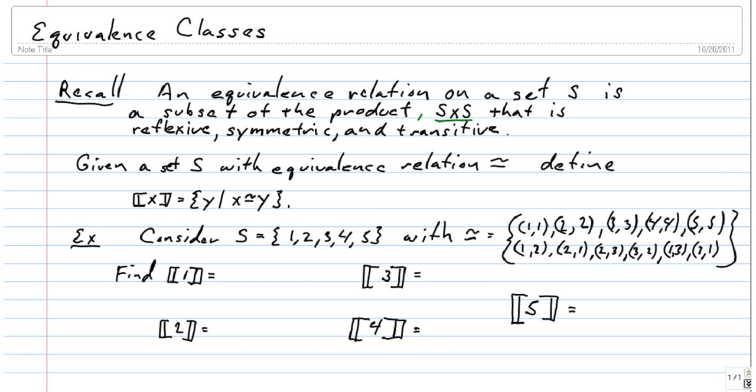So then given a set S with an equivalence relation on it, we define the equivalence class. We use this blackboard bold brackets around X to indicate equivalence class. So the equivalence class of X is equal to all Y's such that X is related to Y. So another way of looking at that is that's equal to all Y's such that XY is an element of your equivalence relation.